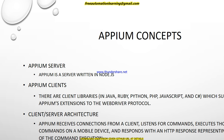Appium receives a connection from a client — which is my code or JAR file — listens for commands, and executes those commands on a mobile device. For example, if I have to click, it listens to the click command and executes it on the mobile device. It then responds with an HTTP response representing the result of the command execution — whether the click passed or failed.